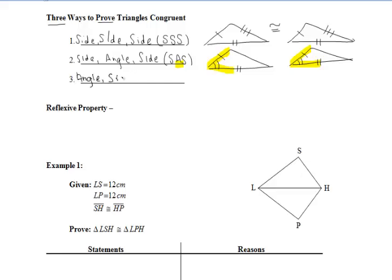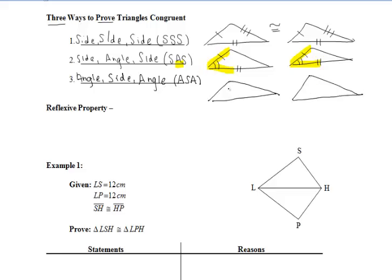Last but not least, we have Angle-Side-Angle, abbreviated ASA. Similarly to SAS, there are restrictions — we want to be careful about the placement of the side. If we have one pair of congruent angles and another pair of congruent angles, the congruent side must be included between the pairs of congruent angles. You should be able to trace angle, then side, then angle on your triangles. If that's true, then the two triangles are congruent.